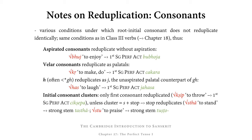Secondly, velar consonants reduplicate as palatals. For example, from kṛ 'to make/do,' we reduplicate the k, but k is a velar consonant and so it reduplicates as its palatal equivalent ch. So we get cakāra — ch is the reduplicated form of k. The vowel a in the reduplicative syllable will be explained shortly. Then we have kār, which is the verbal root kṛ in guna, and then a, the ending for the first singular perfect active, giving cakāra.